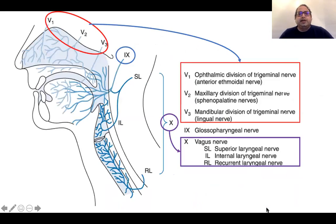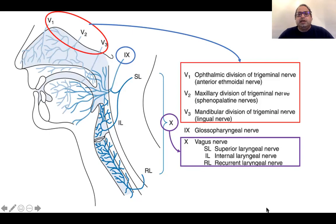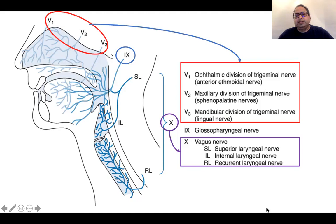Looking at the trigeminal nerve, all three divisions are involved. We have the anterior ethmoidal nerves from the ophthalmic division, the sphenopalatine nerves from the maxillary division, and the lingual nerve from the mandibular division. We don't need to worry much about the lingual nerve. Then we have the glossopharyngeal nerve, and from the vagus we have the superior laryngeal nerve with its internal laryngeal branch, and the recurrent laryngeal nerve.